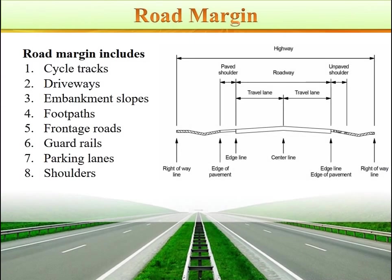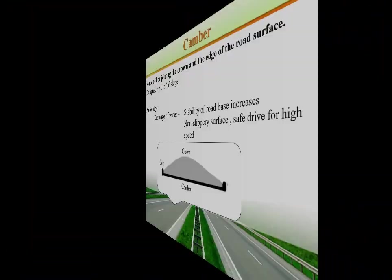Road margin includes: cycle tracks, driveways, embankment slopes, footpaths, frontage roads, guardrails, parking lanes, and shoulders.